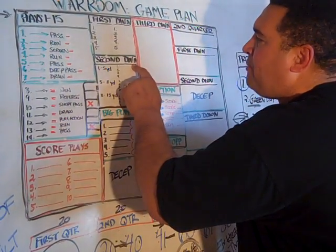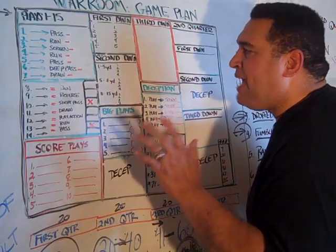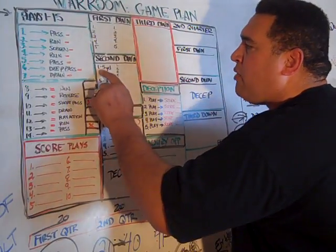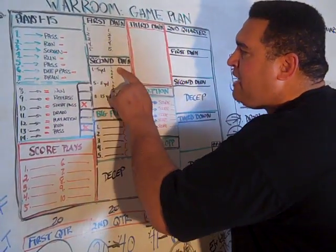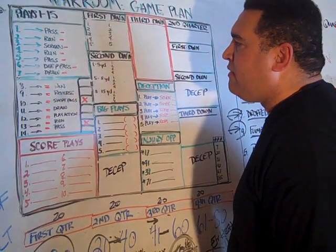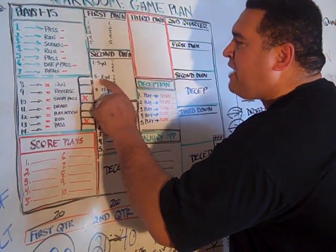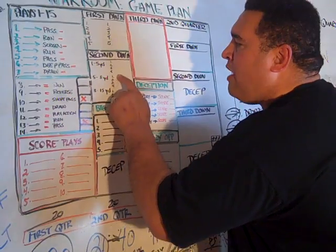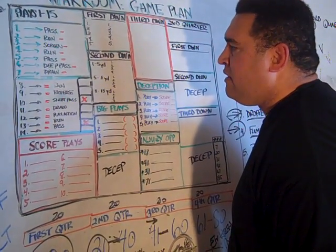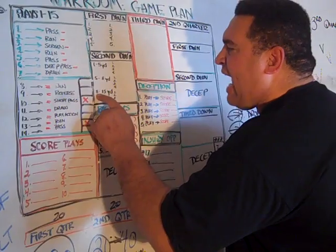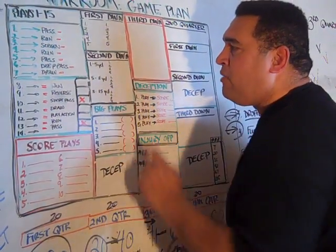Then they'll have a list for second down, but this one is by distance. If it's first down and 5 yards to go, these are the plays that you want to run. If it's second down, 5 to 8 yards to go, these are the plays you're going to run. If it's second down and 8 to 15 yards to go, these are the plays you're going to run.